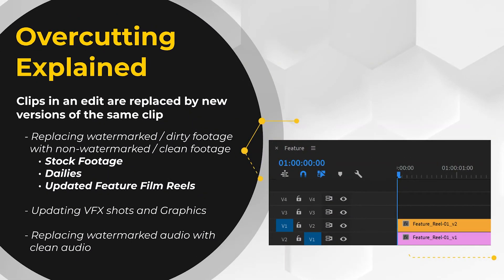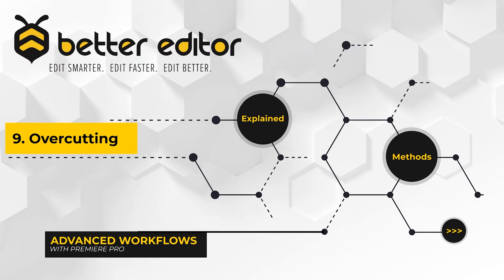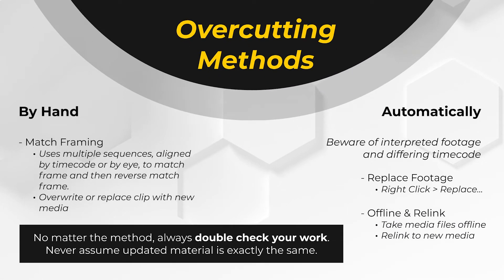So what is overcutting? Overcutting is simply the process of replacing watermarked or dirty footage with clean or unwatermarked footage. You'll run into dirty footage anytime you're working with dailies from a film set, stock footage demos, viewing pre-release versions of new films, and in pre-visualizations or pre-vis when working in graphics-heavy pipelines. Like most editing things, there are a few different ways to overcut, one of which is by hand — and that's where the name is derived.